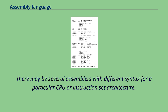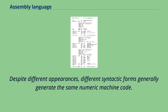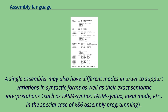There may be several assemblers with different syntax for a particular CPU or instruction set architecture. For instance, an instruction to add memory data to a register in an x86 family processor might be written in original Intel syntax, whereas this would be written differently in the AT&T syntax used by the GNU assembler. Despite different appearances, different syntactic forms generally generate the same numeric machine code. A single assembler may also have different modes to support variations in syntactic forms as well as their exact semantic interpretations.